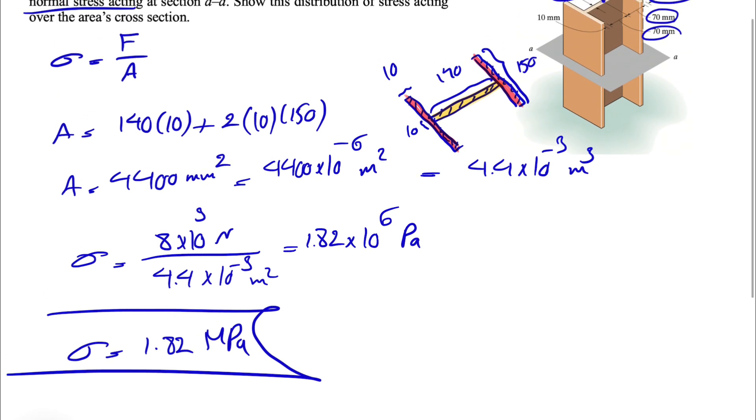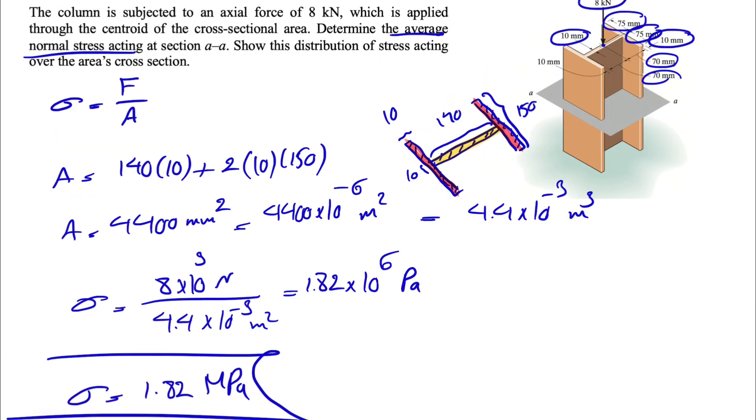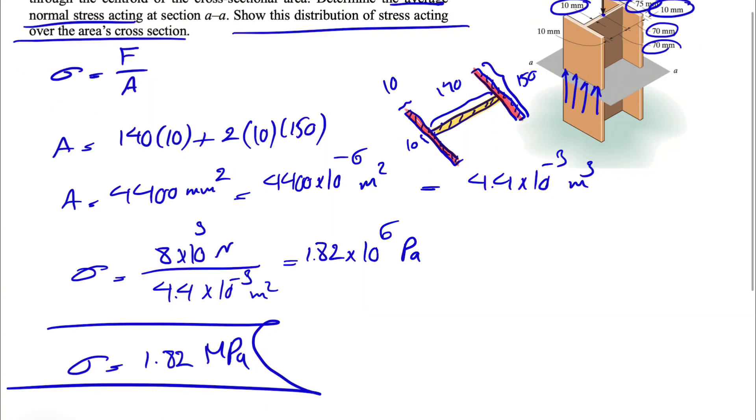So that's the part where we needed to find the average normal stress acting on the section. And the second one, we need to show the distribution of stress acting on it. So if you want to show it, basically we have this stress of 1.82 megapascals acting everywhere. So we have the same scenario here, and we have the same thing in the middle. So basically we have this distribution here, all upward, which is going to be the answer for showing the distribution of stress acting on the area's cross-section.